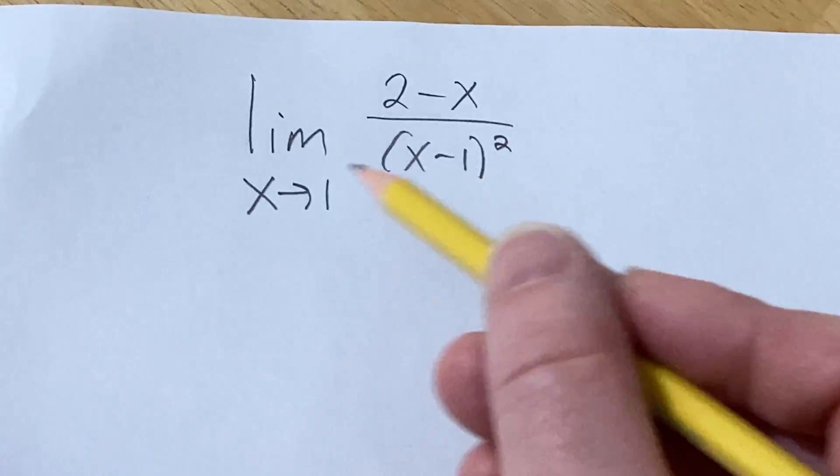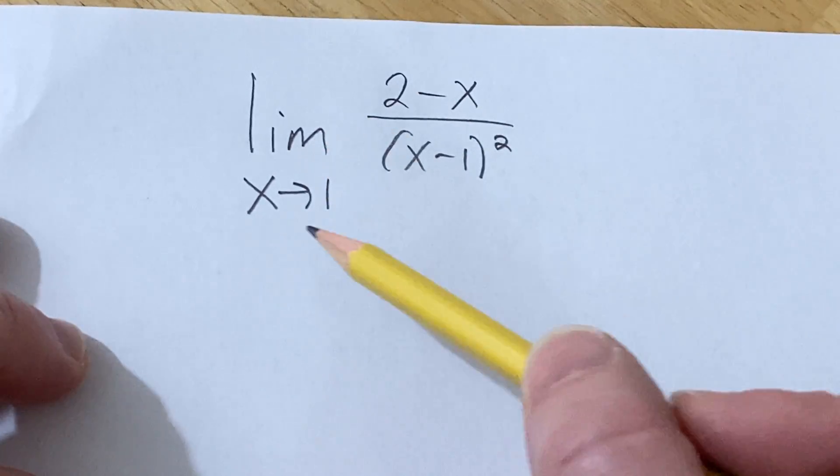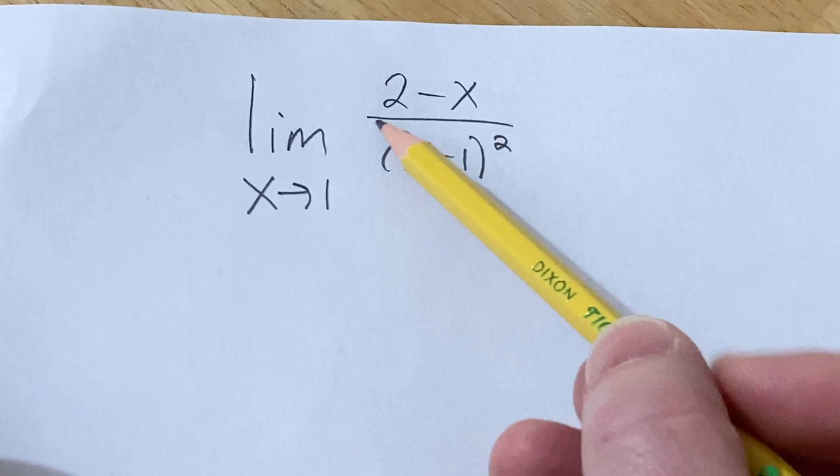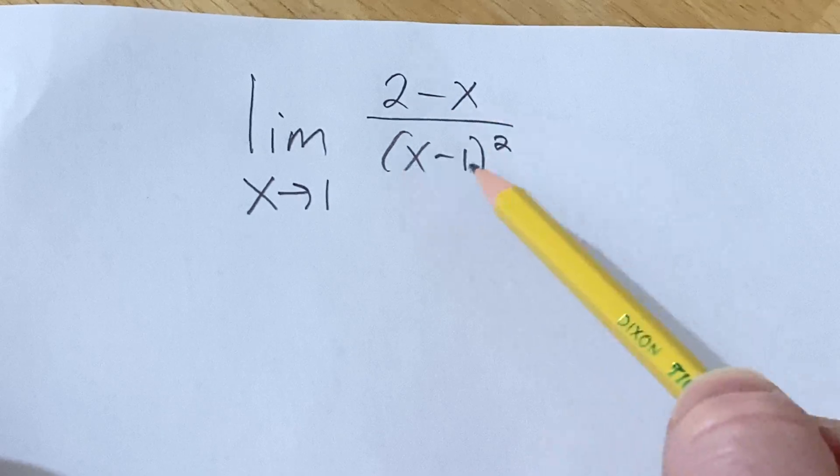Hello, in this video we're going to find this limit. We have the limit as x approaches 1 of 2 minus x over x minus 1 squared.